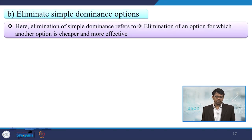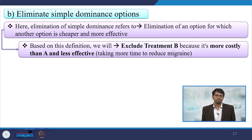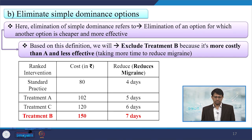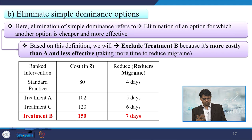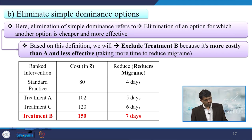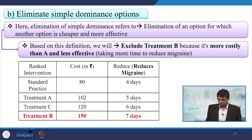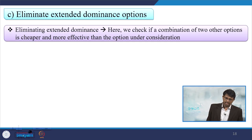The second step is eliminating simple dominance options. Simple dominance refers to elimination of an option for which another option is both cheaper and more effective. Based on this, we exclude treatment B because it is more costly than A and also less effective, taking more days. So B is excluded.